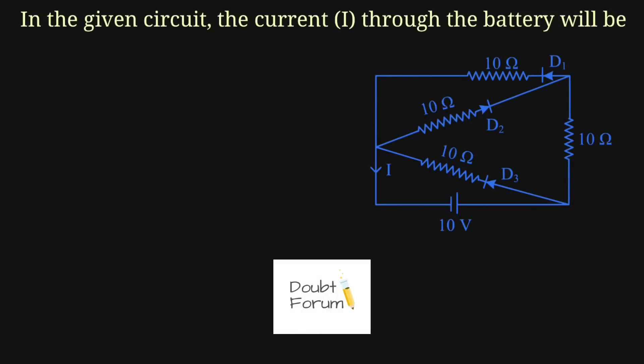Hello friends, I welcome you all to DAWD forum. In this question, this circuit is given and we are asked to find the value of the current IE, which is also passing through this 10 volt battery. So before I solve this question, I would like to explain a little bit about the flow of current as well as about the biasing of a diode.